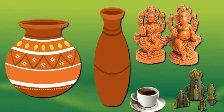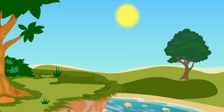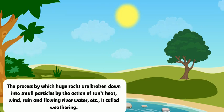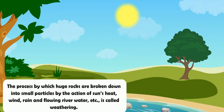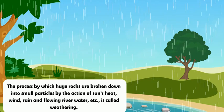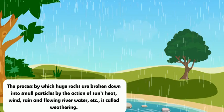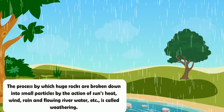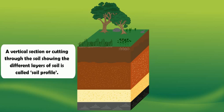Before we discuss how soil is formed, we must know the meaning of the term weathering. The process by which huge rocks are broken down into small particles by the action of sun's heat, wind, rain, and flowing river water is called weathering.